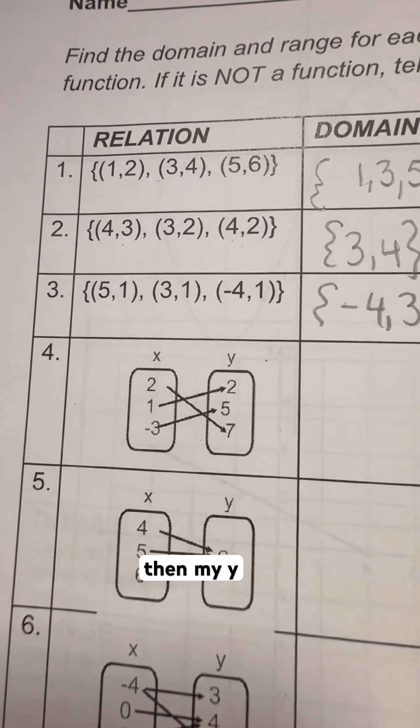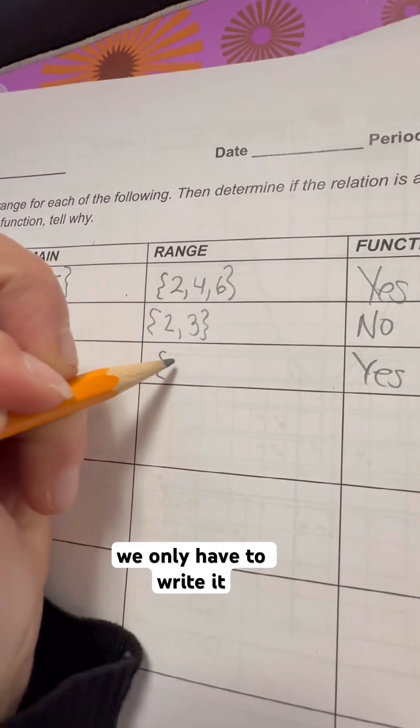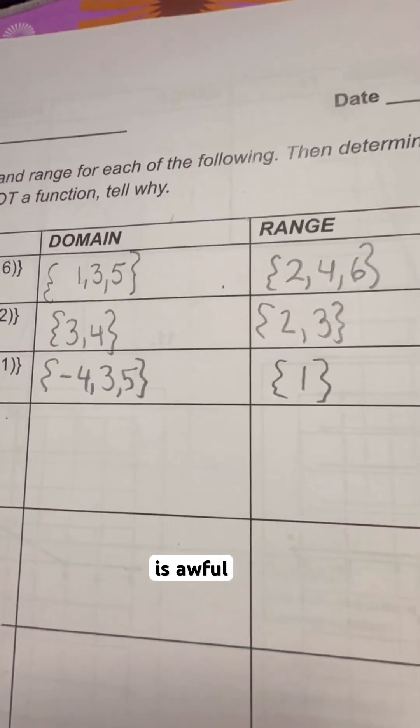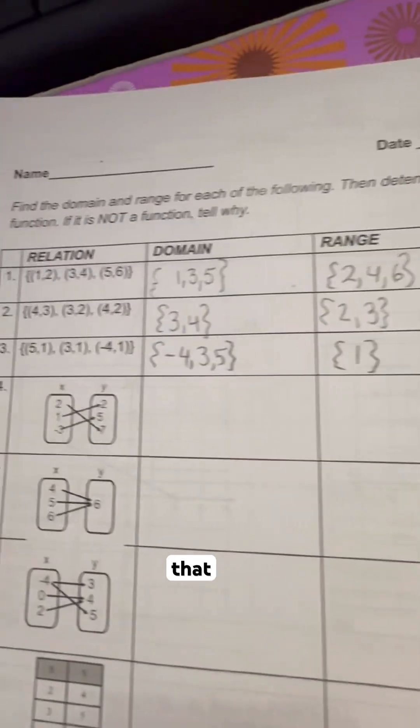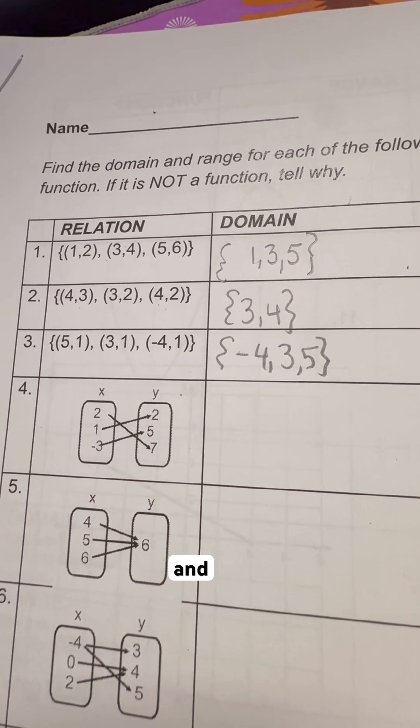And then my y values. They are all 1. Beautiful. We only have to write it once. And we just put it in that curly bracket. But that is how we do a set of coordinates with our domain, range, and functions.